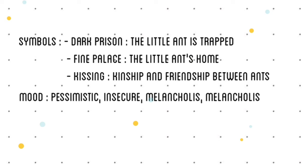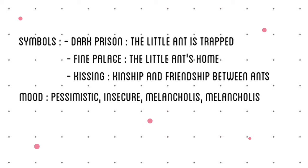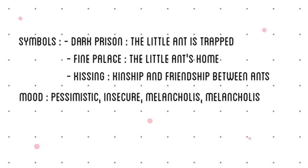Now we have symbolism. First is the garden — it symbolizes paradise or heaven. Second is the dark prison — it symbolizes the end, and it represents being trapped under the thimble, because under the thimble it is dark like a prison. Third is the fine palace — it symbolizes the ant's house, which is magnificent and like a beautiful place.